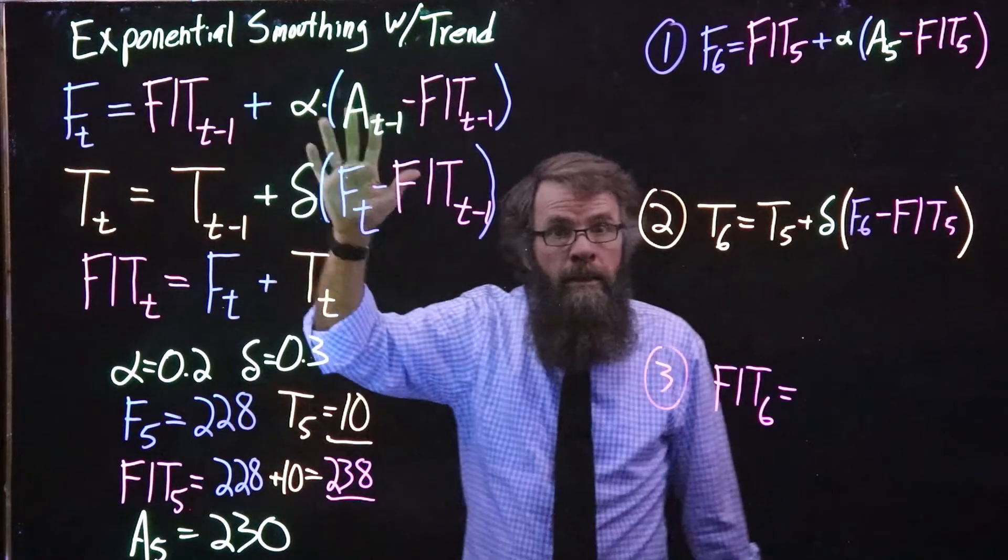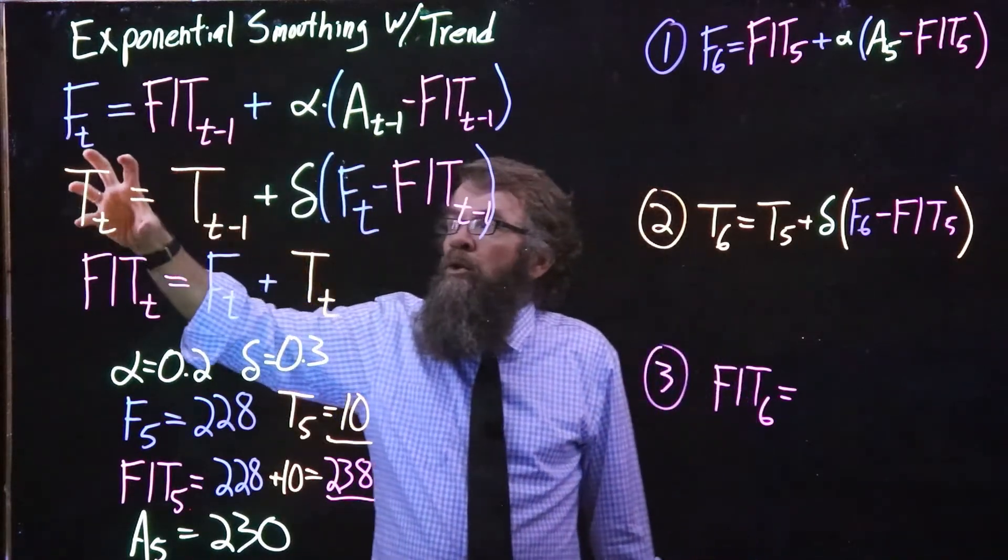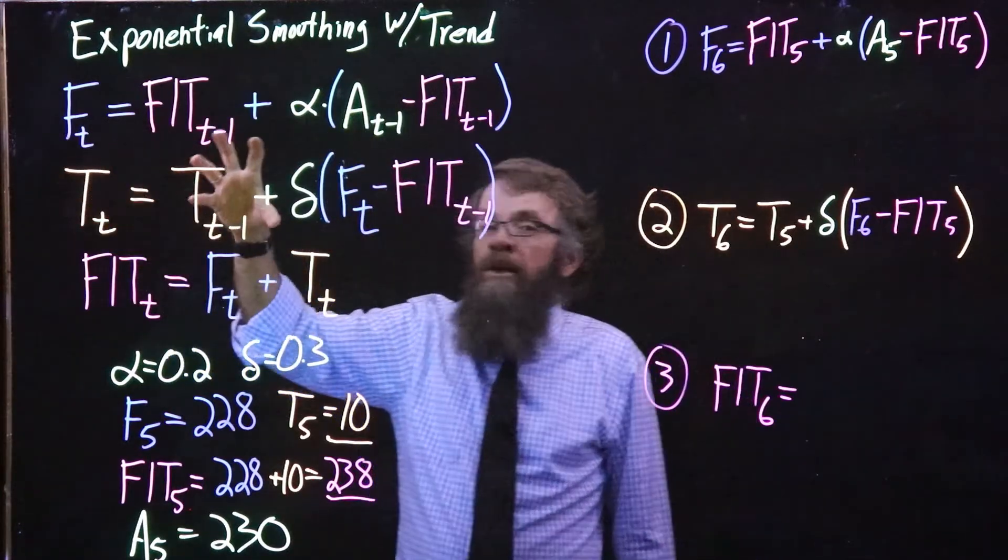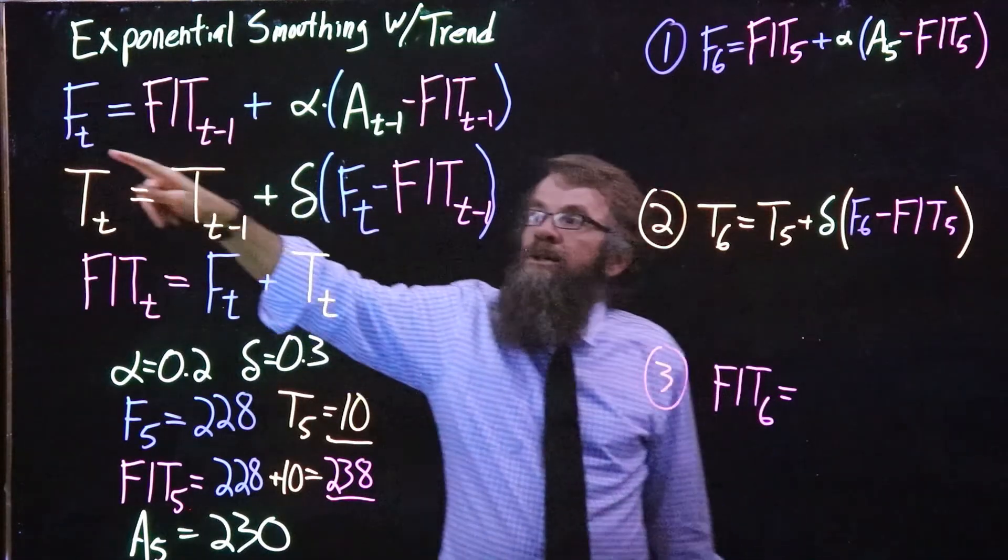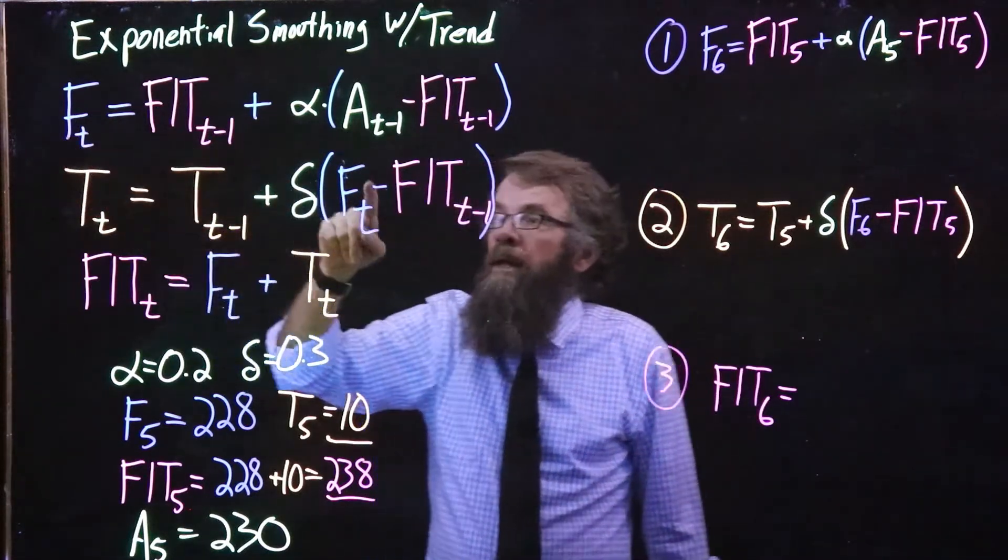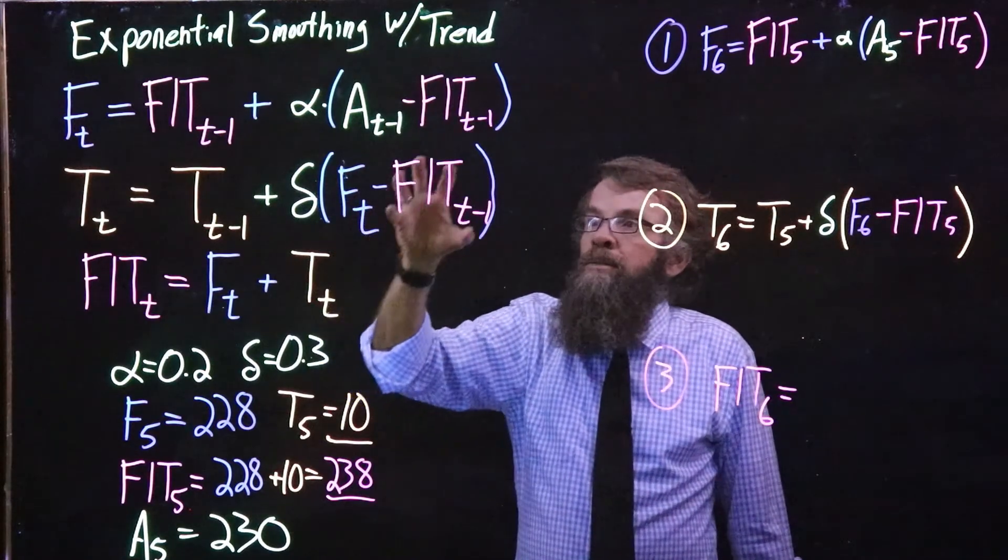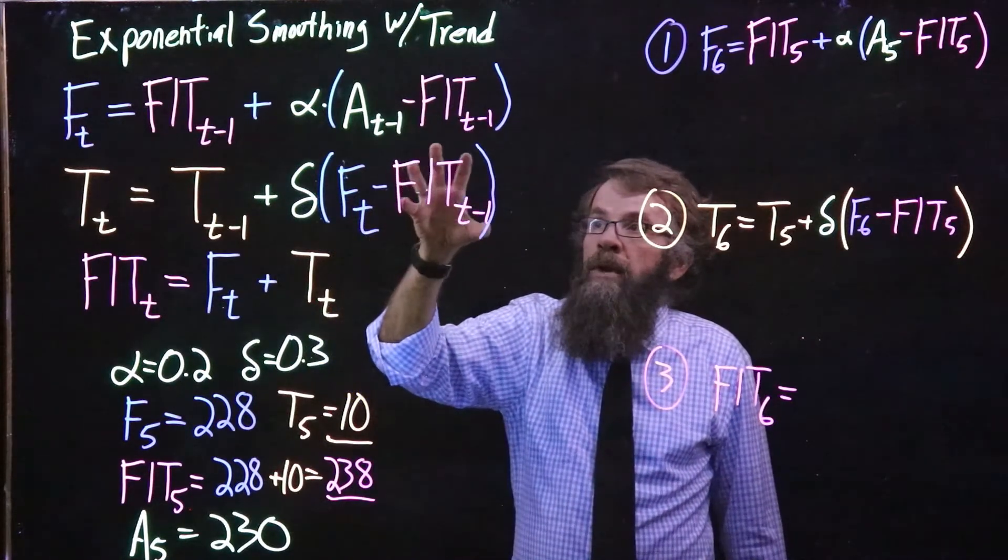So we update that, and then to calculate our new estimate of the trend, we take the old estimate of the trend plus delta times this new F that we just calculated, and we put that into this formula and subtract off the forecast including the trend.